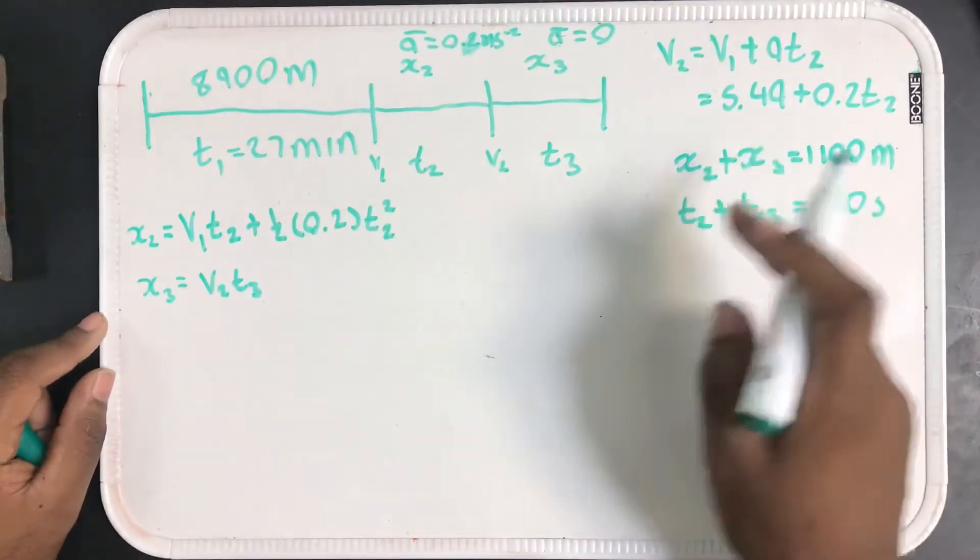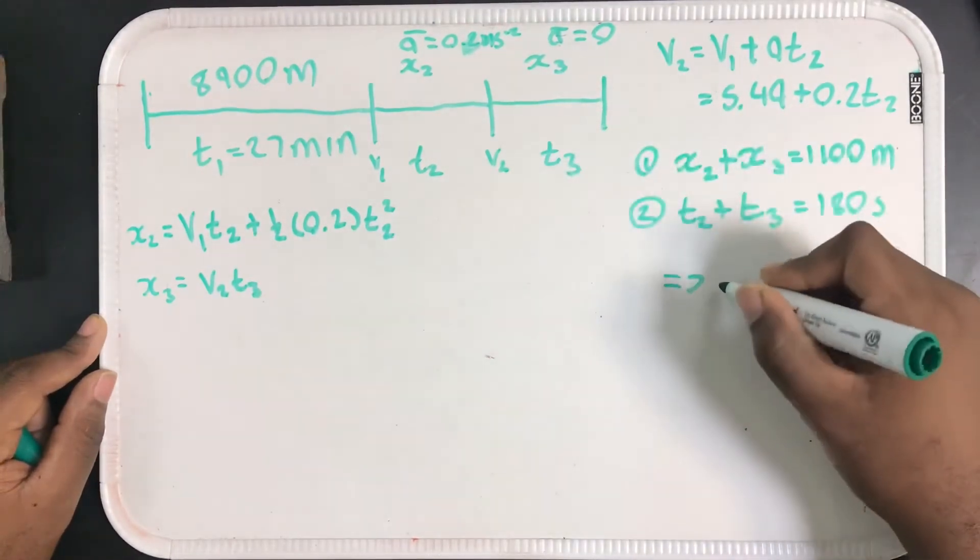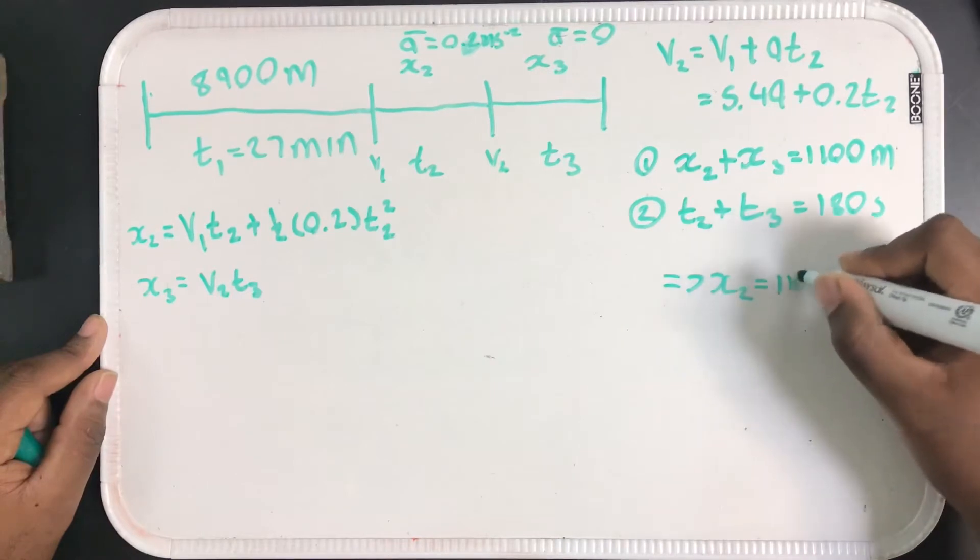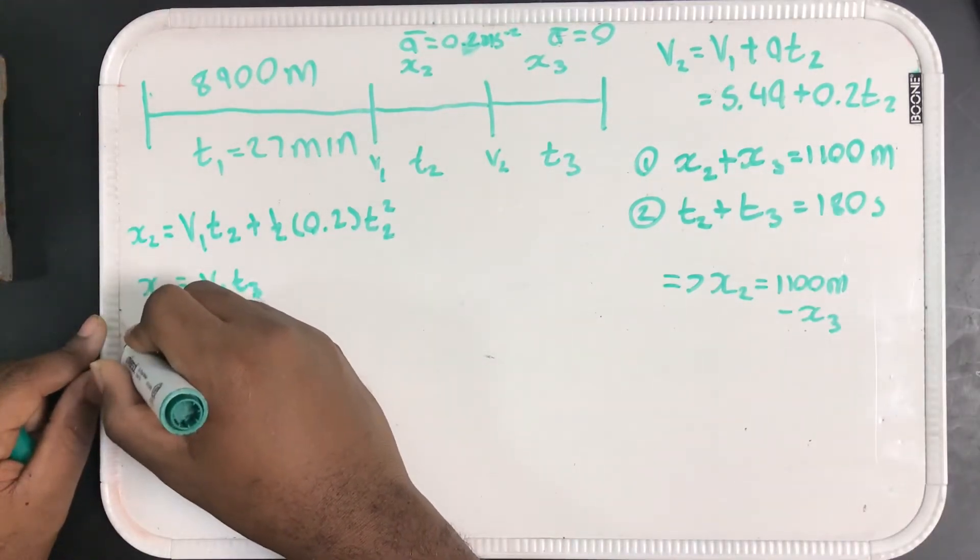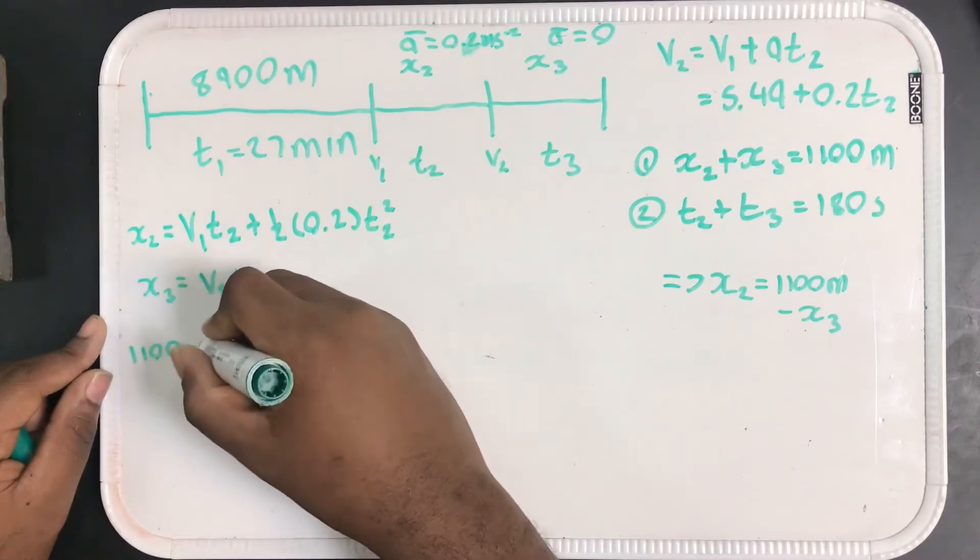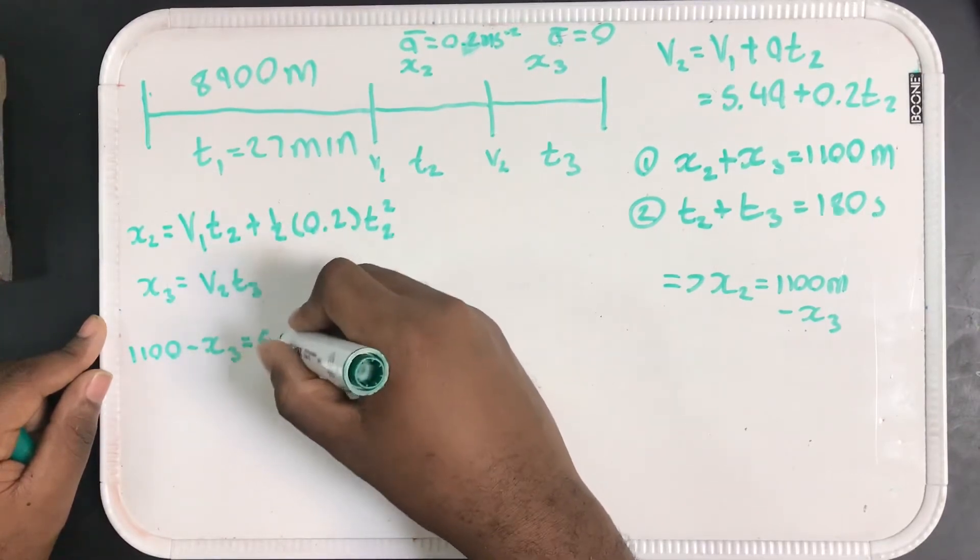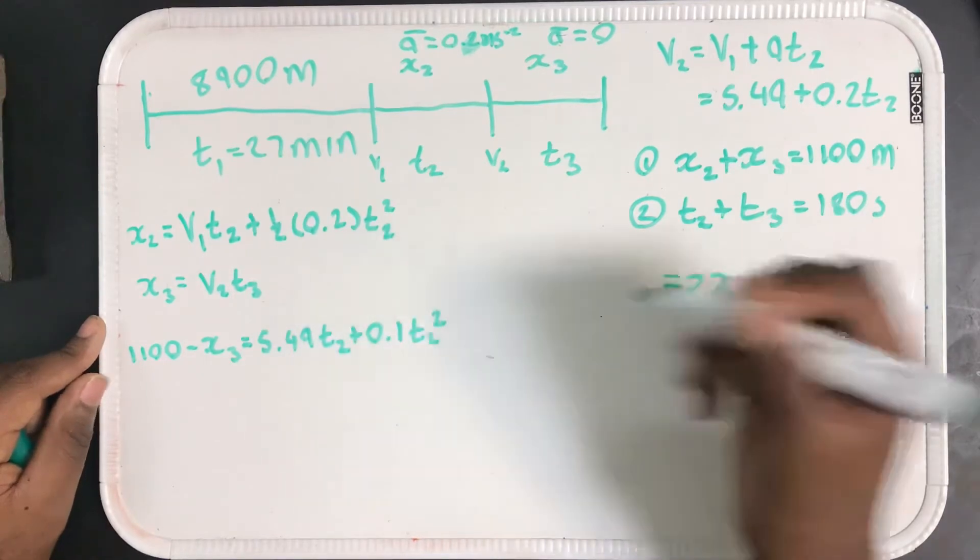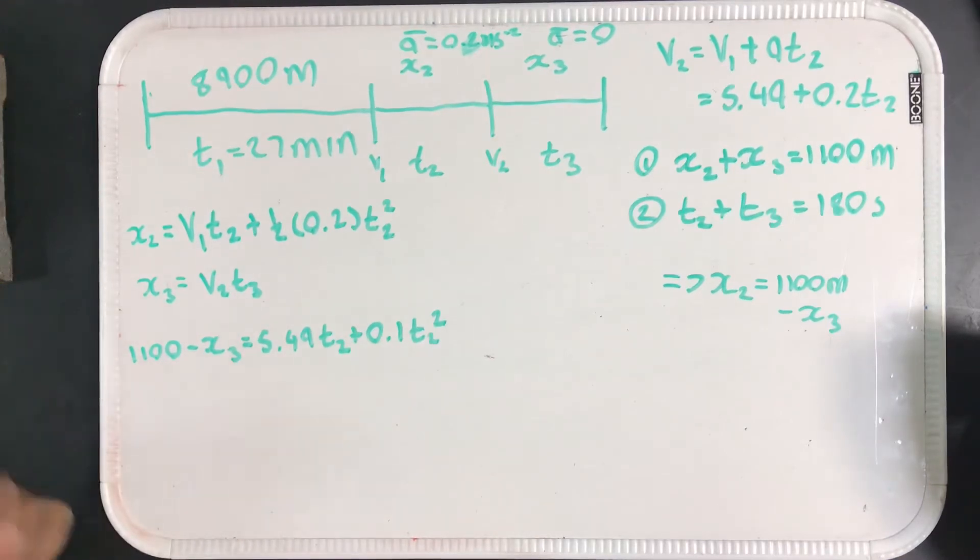Let's see if we can simplify things a bit. We can substitute for X2. I'll call this equation 1, I'll call this 2. Because of this right here, we know that X2 equals 1100 minus X3. So if I plug that in, I have 1100 minus X3 equals 5.49 T2 plus 0.1 T2 squared. This is good because I have an equation with T2 on one side. However, I still have this pesky X3 right here, and that's another unknown.